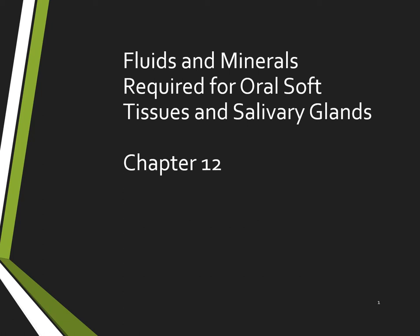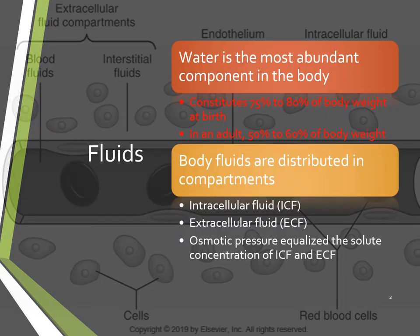Chapter 12 is on the fluids and minerals required for oral soft tissue and salivary glands. Water is the most abundant component in the body. It constitutes 75 to 80 percent of body weight at birth, but in an adult it's about 50 to 60 percent of body weight.